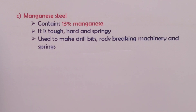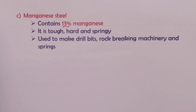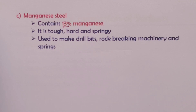Our last alloy steel is manganese steel, which contains 13% manganese. Manganese steel is tough, hard, and springy. We use it to make drill bits, rock-breaking machinery, and springs. With that, we've come to the end of our rather long video, where we have taken you through the various types of iron and their uses. Thank you so much for your time, and we wish you all the best in your revision.